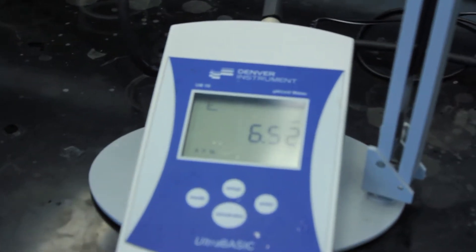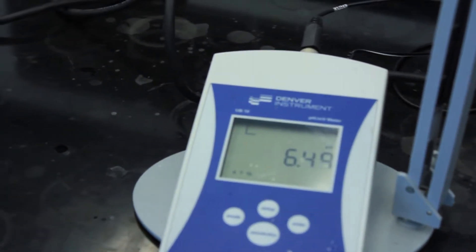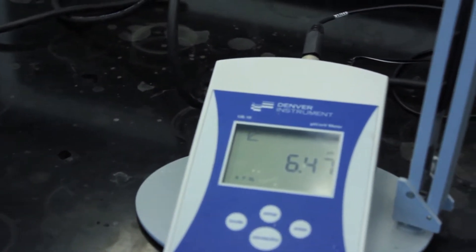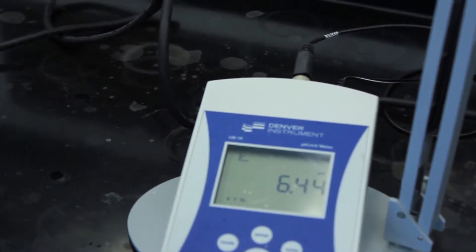Once you approach your equivalence point you have calculated, decrease the volume of sodium hydroxide being added. You can adjust the stopcock to add a few drops at a time and decrease the volume of titrant added to about 0.2 milliliter aliquots.